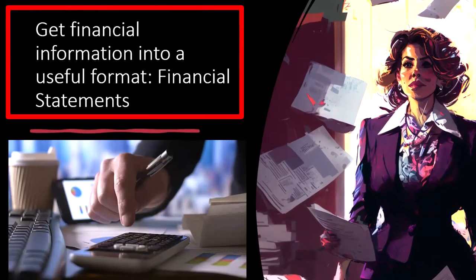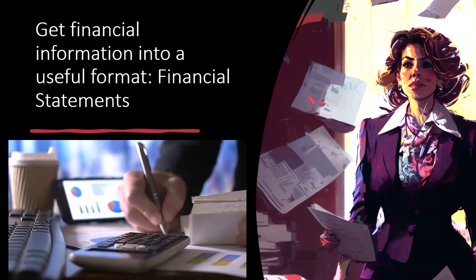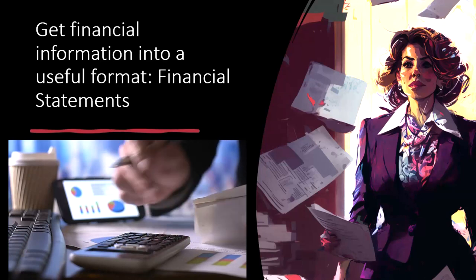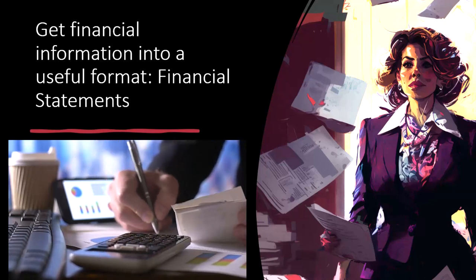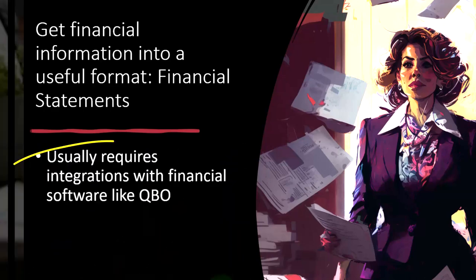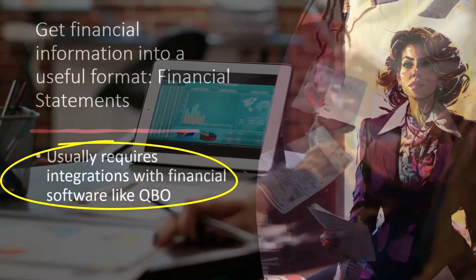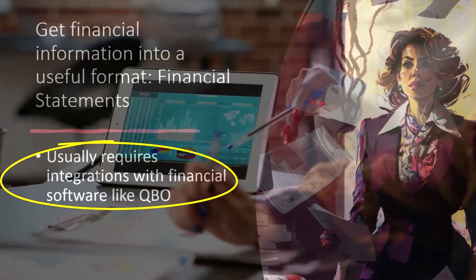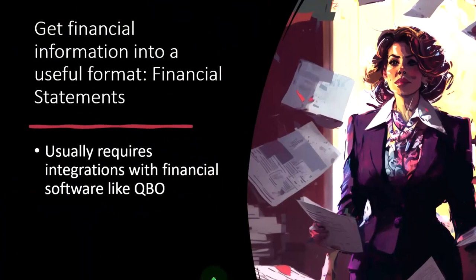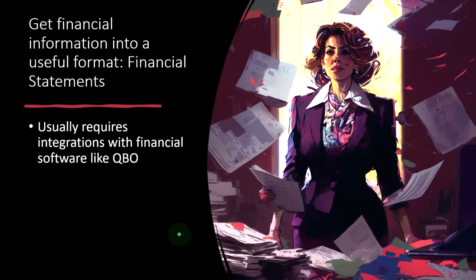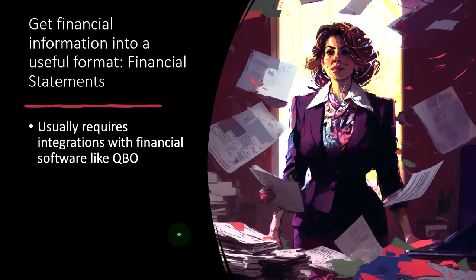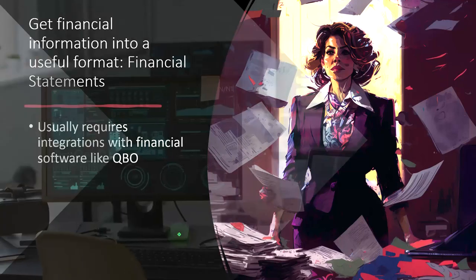One of our objectives is to get financial information into a useful format — financial statements: the balance sheet and the income statement. That's what software like QuickBooks financial software is designed to do. It usually requires integrations with financial software like QBO. If you were just running a service business or selling physical inventory in-person, you could enter financial data as it happens into QuickBooks Online. But since all the sales are being facilitated on another web-based application, we have to pull information from those other applications into QuickBooks, which requires some integrations.